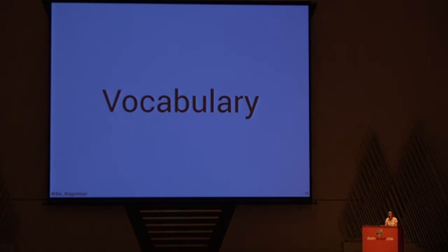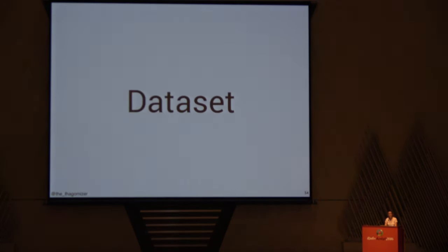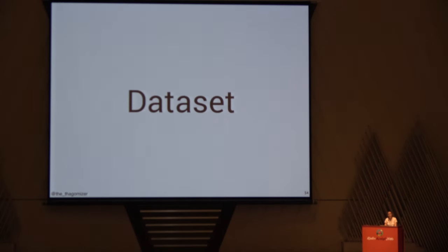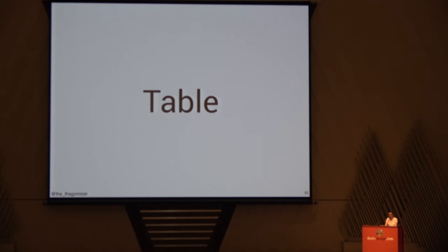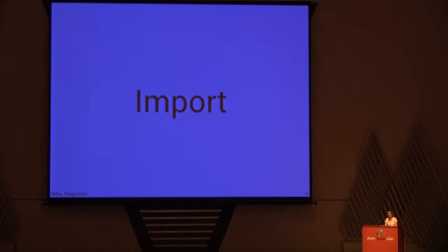To use BigQuery, you need to know some basic vocabulary. The first thing is a data set — this is a group of related tables. If you're used to Postgres or MySQL, just think of it as a database. A table is a bunch of records structured in some regular way. That's all you need to know. Now we need to get the data into BigQuery, and I'm going to show you two ways of doing that. The GitHub data someone else took care of for me, but I had to put the RubyGems data in there.